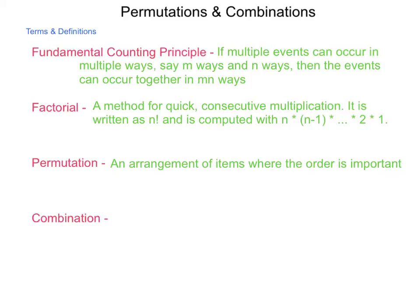Next up, combination. And this is an arrangement of items where the order is not important. Very similar to permutation. The difference between these two: permutation, the order is important. Combination, it is not. So, we're going to look at each of these items individually.